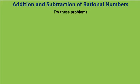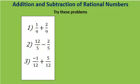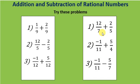Here are some problems for you to try at home. In Box 1 — rational numbers with the same denominator: Problem 1: 1 by 9 plus 2 by 9. Problem 2: 12 by 5 minus 2 by 5. Problem 3: minus 1 by 12 plus 5 by 12. In Box 2 — rational numbers with different denominators: Problem 1: 12 by 7 plus 2 by 5. Problem 2: minus 1 by 11 plus 5 by 4. I hope you will now solve these questions. Thank you.